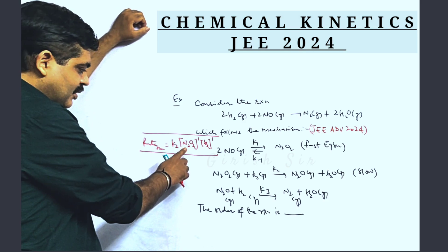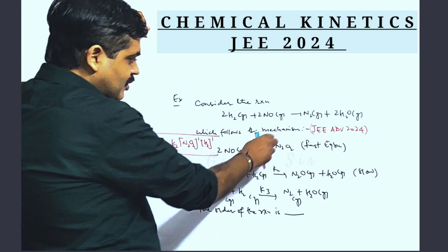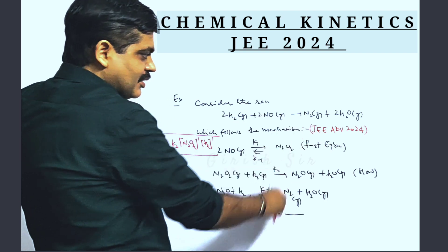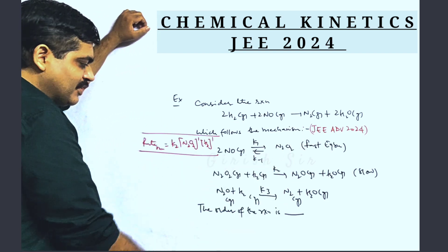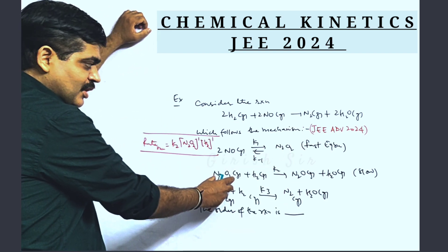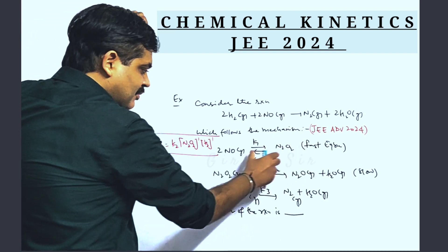But this rate law contains N2O2. N2O2 is an intermediate which is not present in the net reaction, so we need to eliminate N2O2. We use the fast equilibrium step for this purpose.